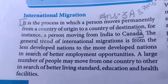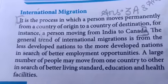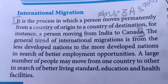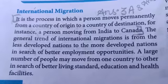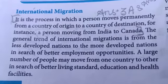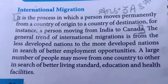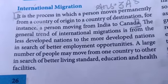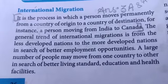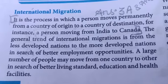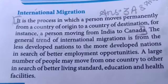Now, international migration. We are talking about different kinds of migration here. In the previous chapter we only talked about immigration and emigration. International migration is the process in which a person moves permanently from a country of origin to a country of destination — for instance, a person moving from India to Canada. The general trend of international migrations is from less developed nations to more developed nations, as people search for better employment opportunities, better living standards, education, and health facilities.